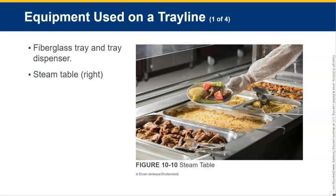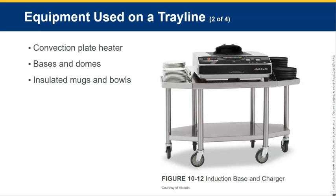The equipment used on a tray line includes fiberglass trays and tray dispensers — the tray is what you're physically carrying the food on, like in a school cafeteria or a cafeteria-style restaurant. You'll also need a steam table. A convection plate heater heats the plate to help maintain the food's temperature since it will be traveling long distances. Bases and domes keep food at the proper temperature, along with insulated mugs and bowls, and a heater for the base.